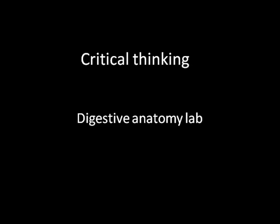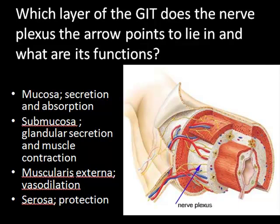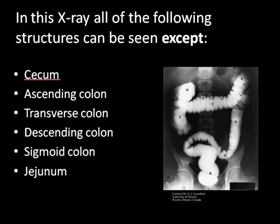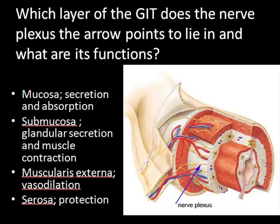This is critical thinking in the Digestive Anatomy Lab and here are some questions. The first one is on histological layers of the GI tract, the second is a histological slide, and the third is a special x-ray. The first question asks: in which layer of the GI tract does the nerve plexus the arrow points to lie, and what are its functions?